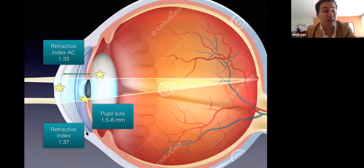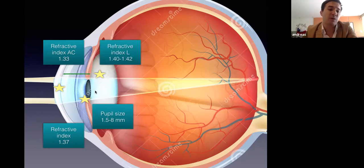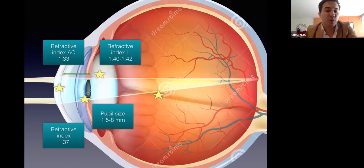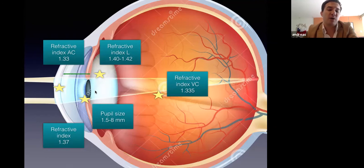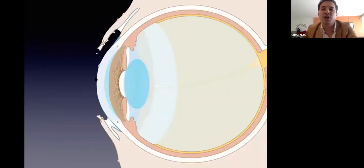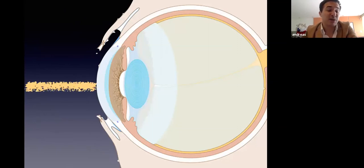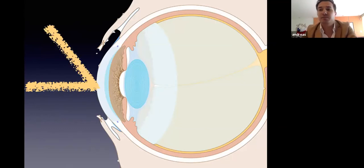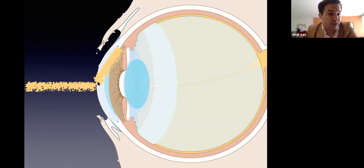The lens has a refractive index of about 1.4 to 1.42. The vitreous cavity, toward the posterior pole, has a refractive index of about 1.335. This difference in refractive index is why light can travel inside the eye. When light enters the eye, it can be reflected, scattered, transmitted, or absorbed.